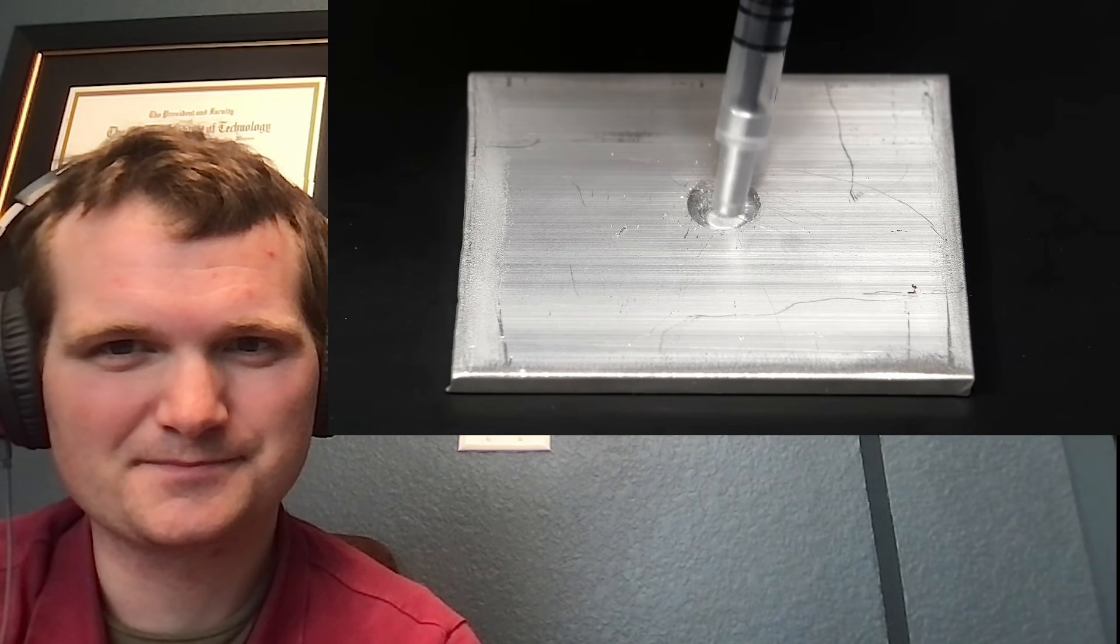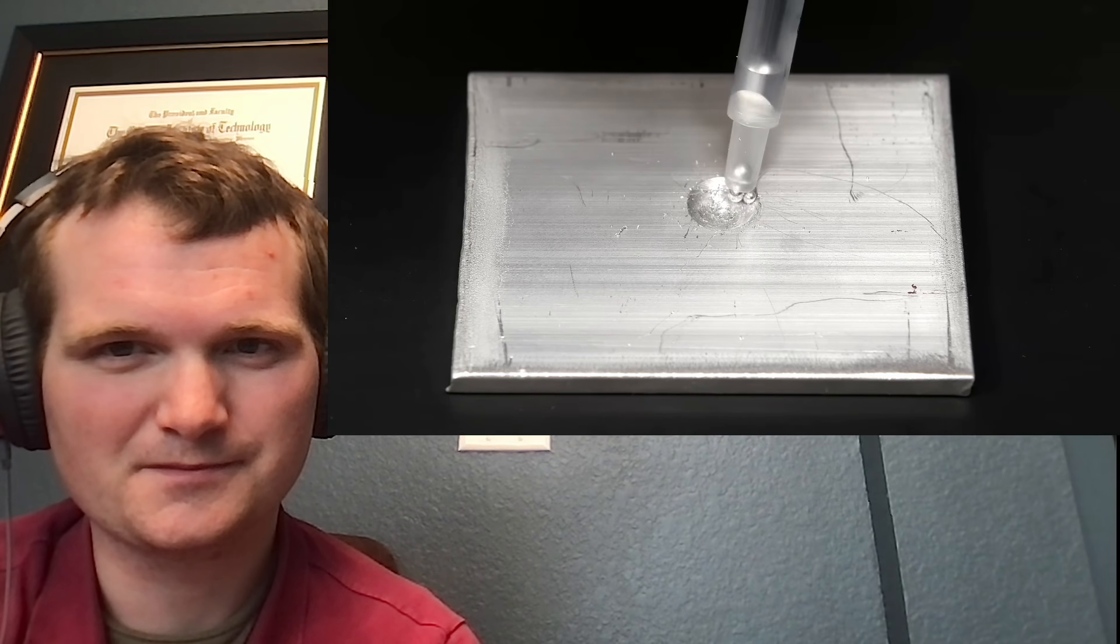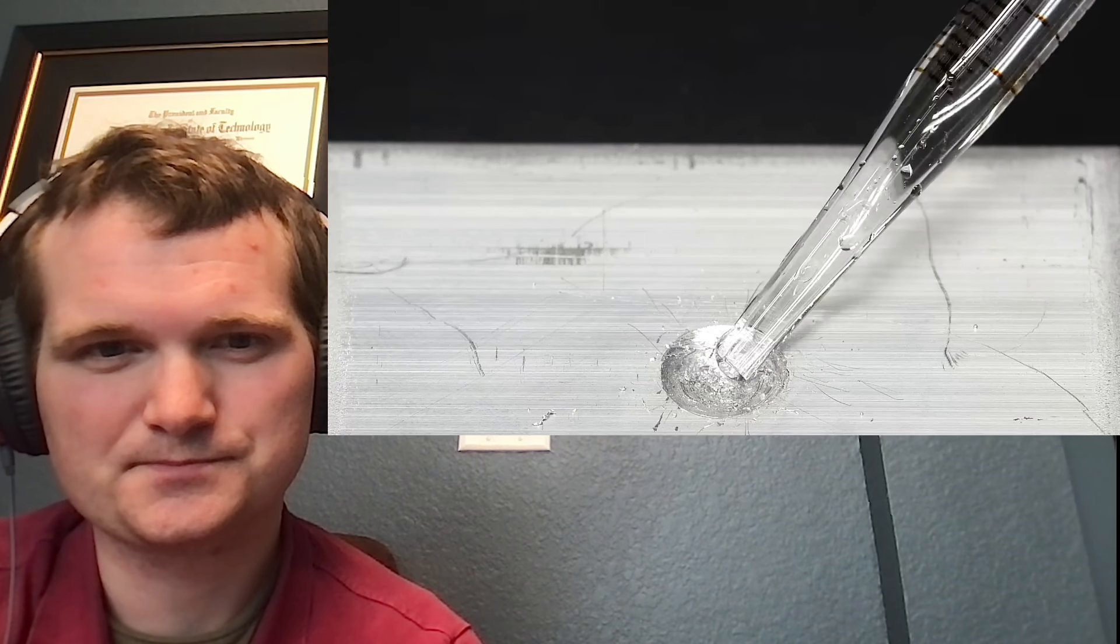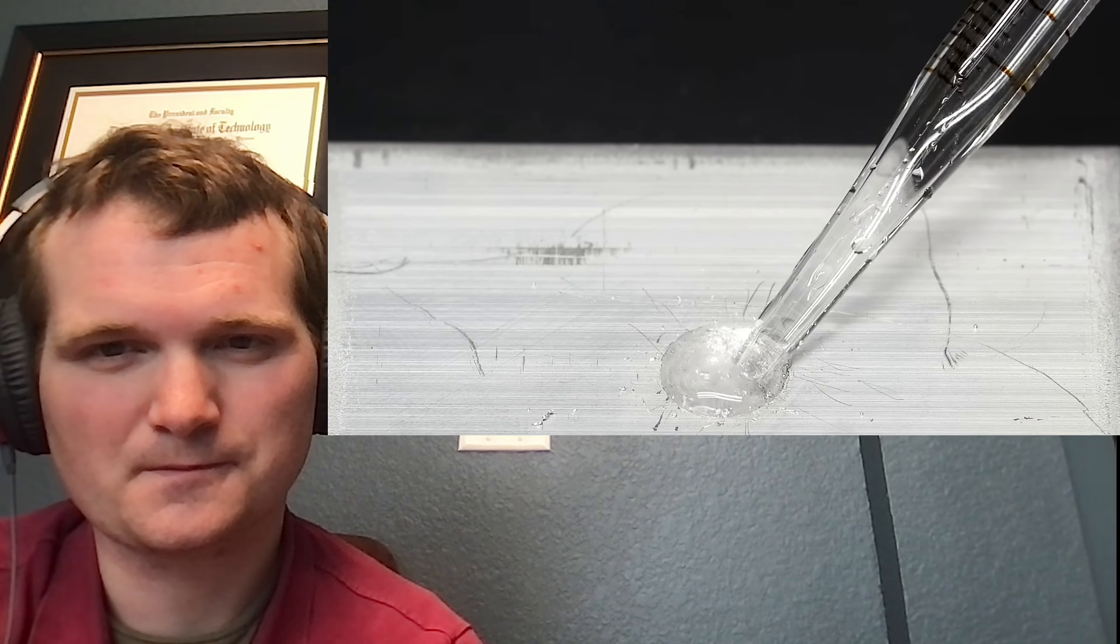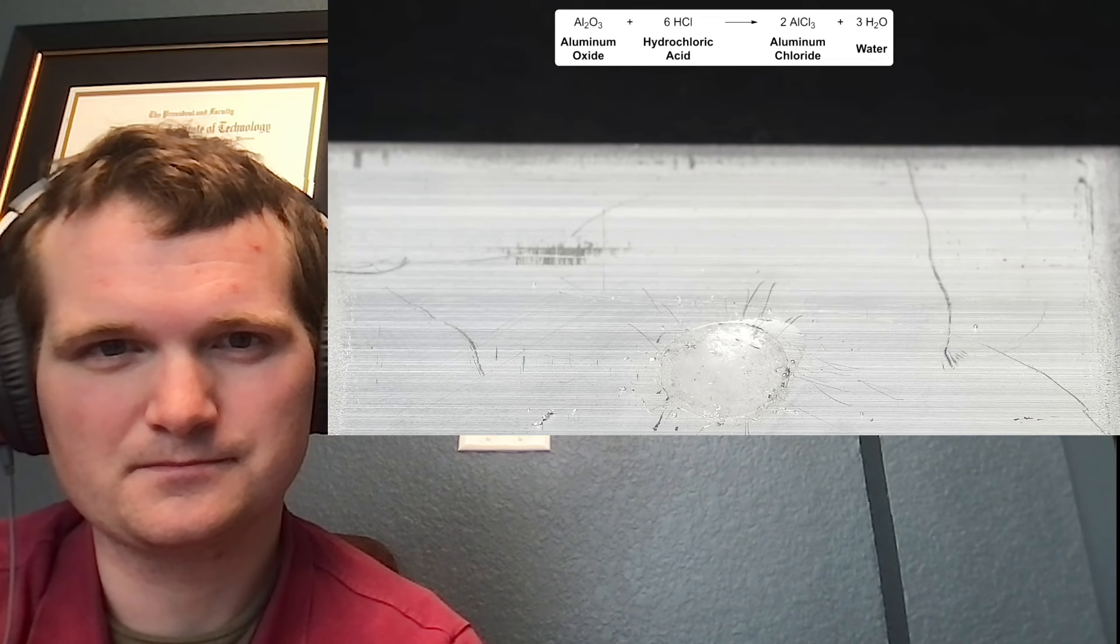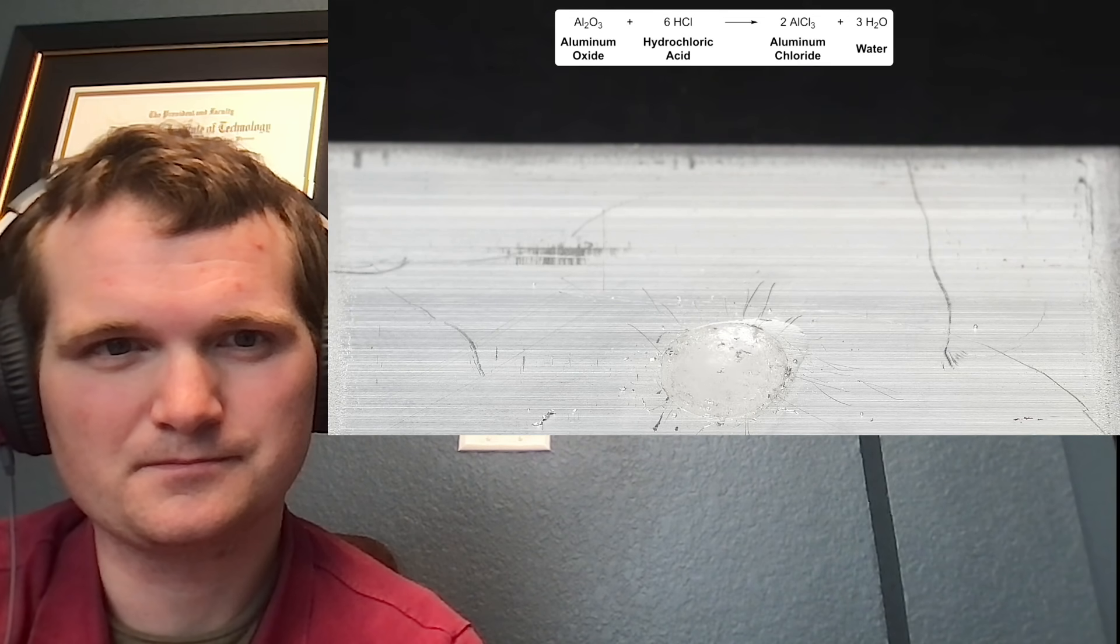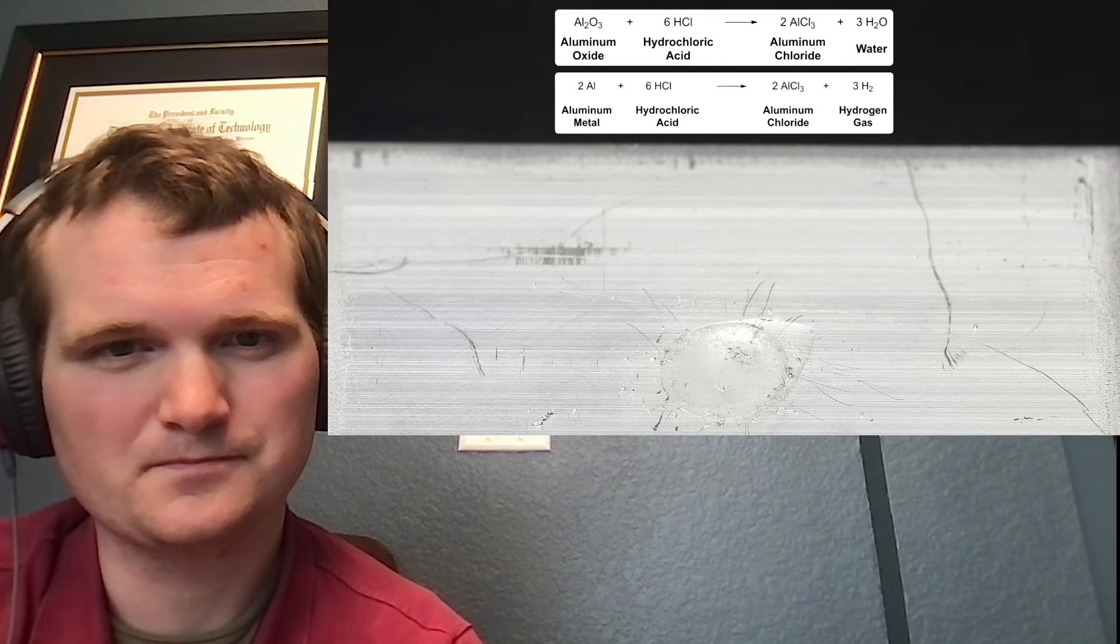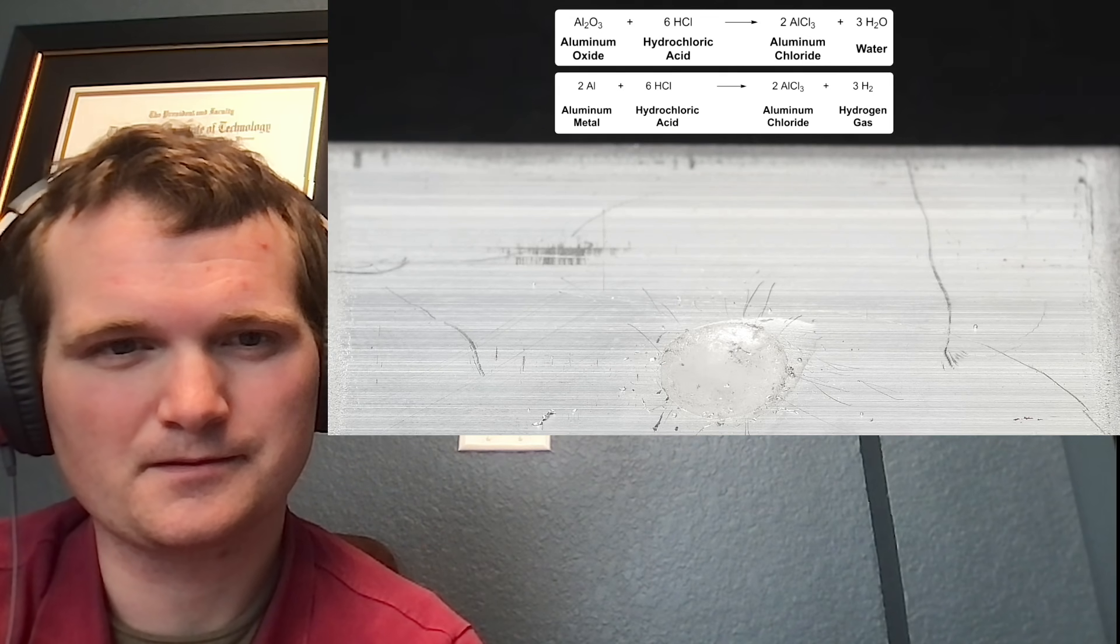Instead of trying to remove the oxide layer mechanically, I'm gonna try to do it chemically. Okay. So I took out all the mercury and I added some dilute hydrochloric acid. The hydrochloric acid quickly reacts with the oxide layer and dissolves it away. This exposes fresh aluminum metal, which also reacts with the acid.